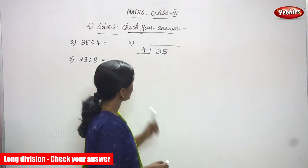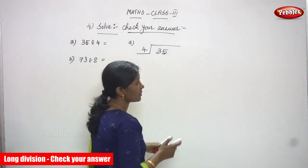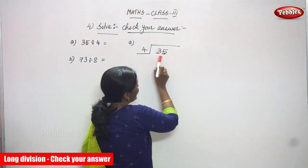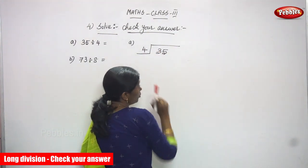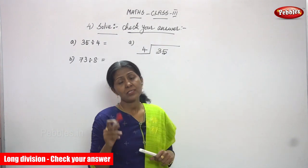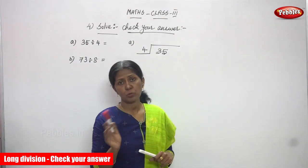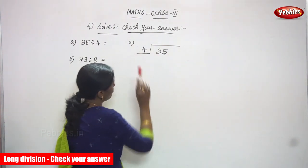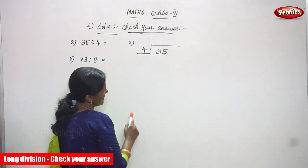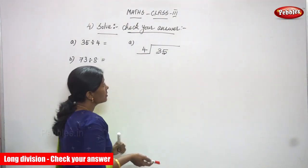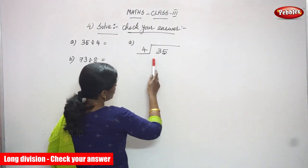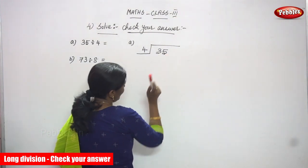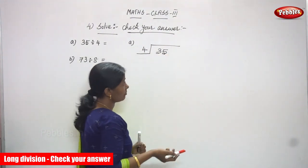So what are you going to do? First, look at the tens digit. This is tens and this is ones — 3 tens and 5 ones. You have to consider only the numbers, not the place values. So 3 is compared with 4. Since 3 is less than 4, it is not enough to divide. So you have to move on to the next digit — you add 5, making it 35.